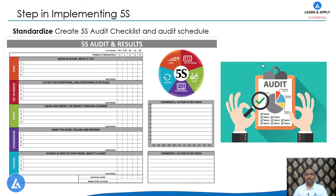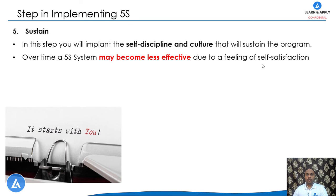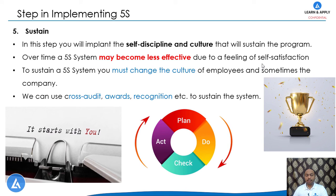The last S in 5S is Sustain. This is a very important step that implants self-discipline and culture to sustain the 5S program over time. A 5S system may become less effective due to a feeling of self-satisfaction, and therefore to sustain it, you must change the culture of employees and sometimes the company. The participation of employees is very important, and that's why we can use cross audits, awards, and recognition to sustain the system.